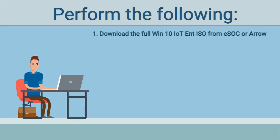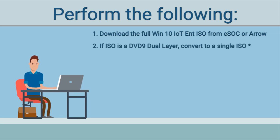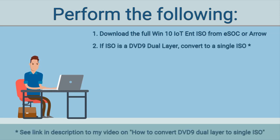First, you're going to download the full ISO from eSoc or Aero. If the ISO happens to be a DVD9 dual-layer, I have a video on how to convert that to a single ISO.